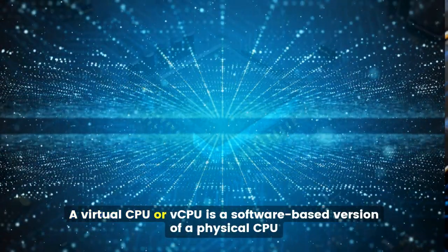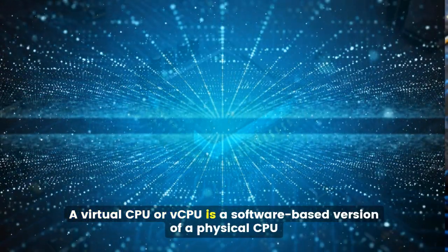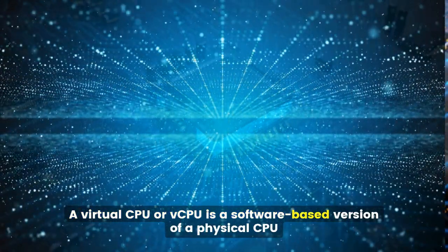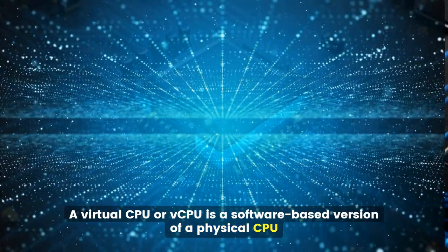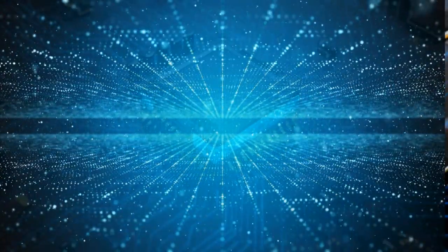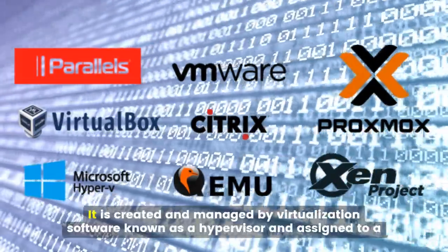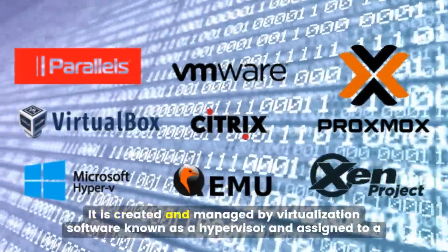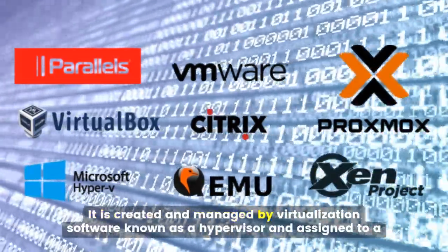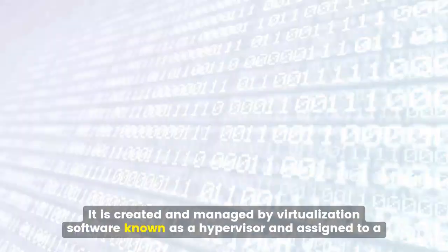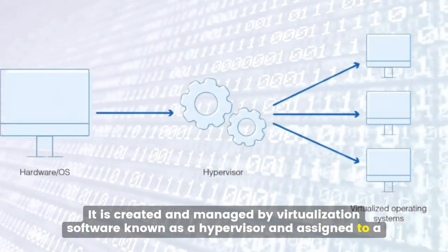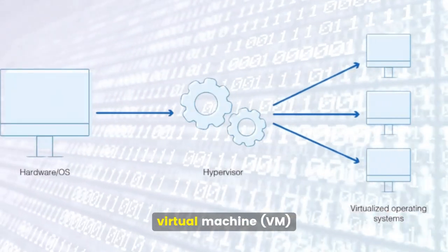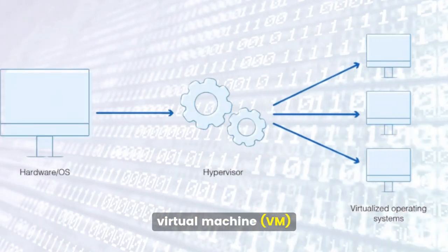A virtual CPU, or vCPU, is a software-based version of a physical CPU. It is created and managed by virtualization software, known as a hypervisor, and assigned to a virtual machine, or VM.